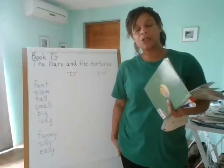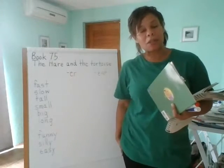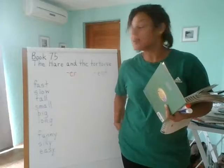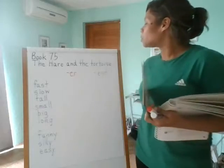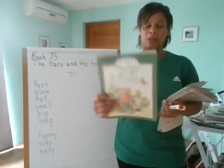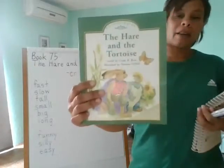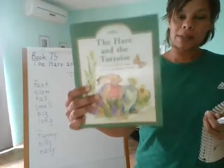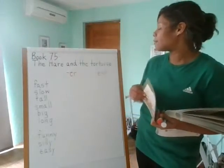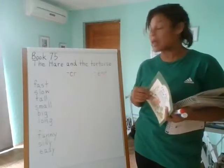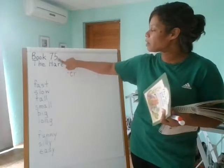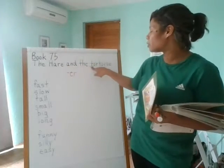Welcome back, boys and girls, to another lesson with Ms. Brown, remote style. Today we are on book 75. The book is called The Hare and the Tortoise. So grab your book, grab your writing book, and find a new page and head up. So book 75, The Hare and the Tortoise.